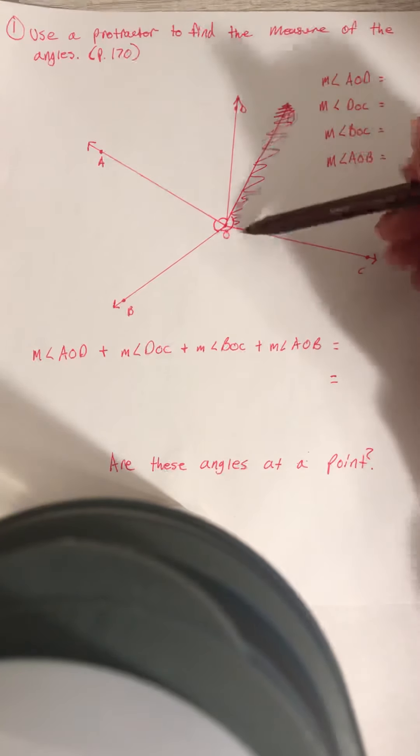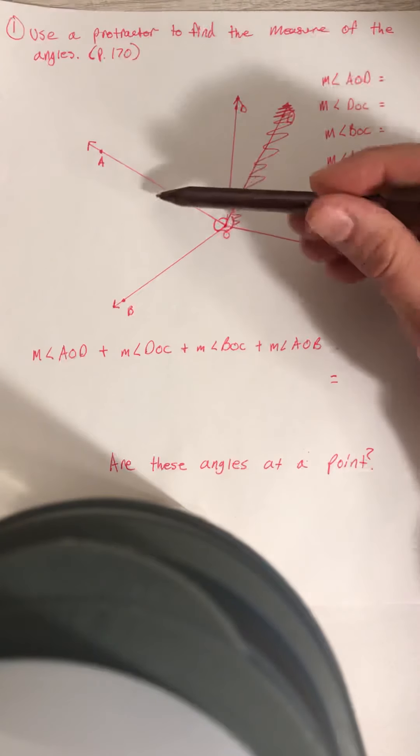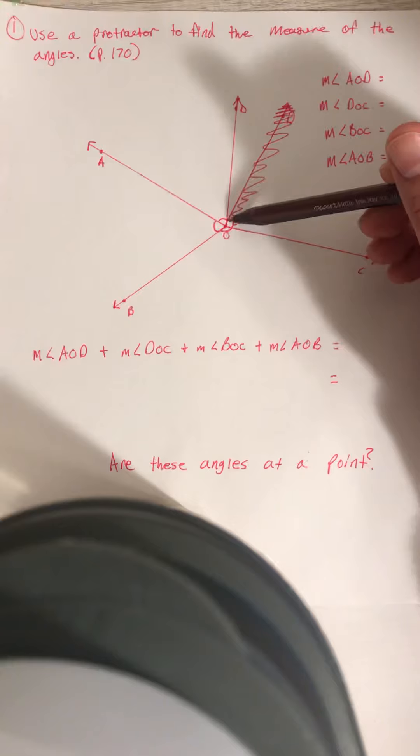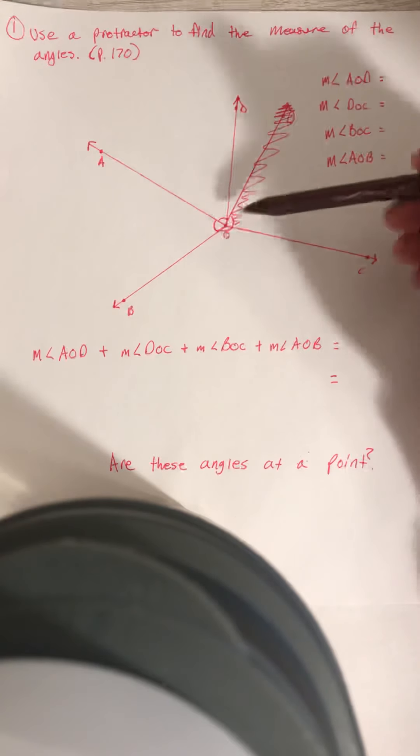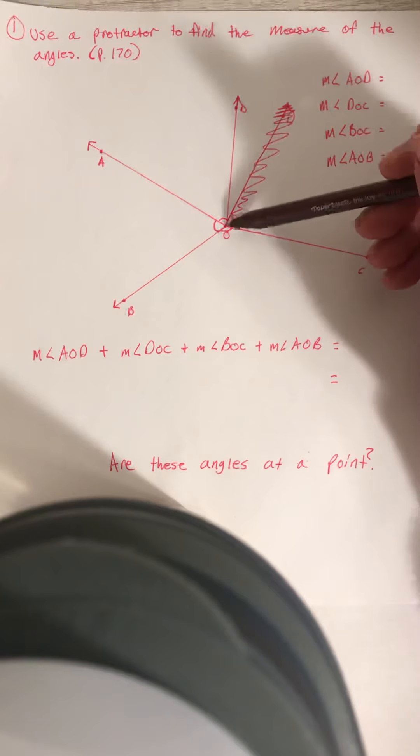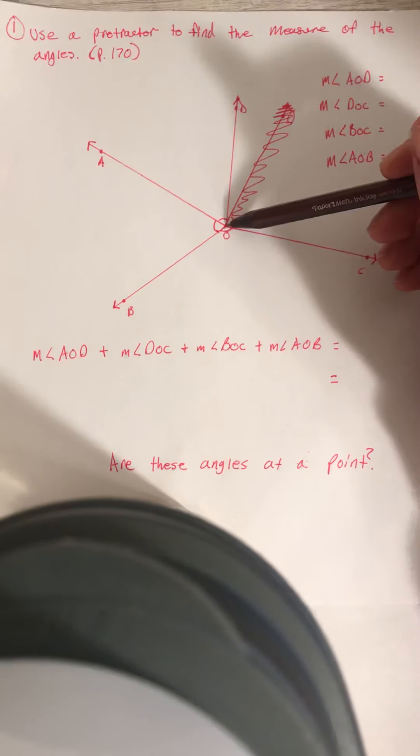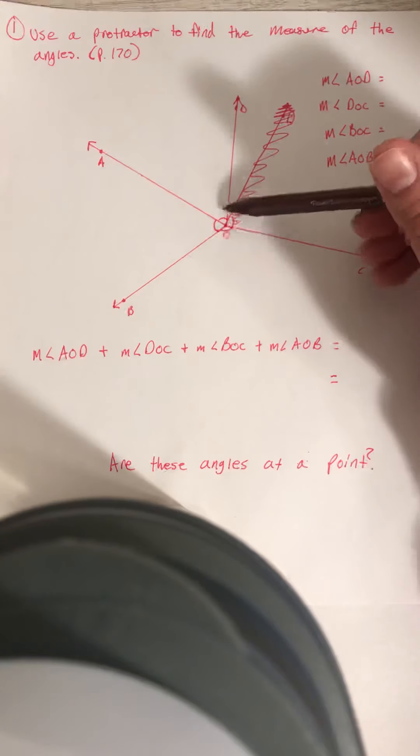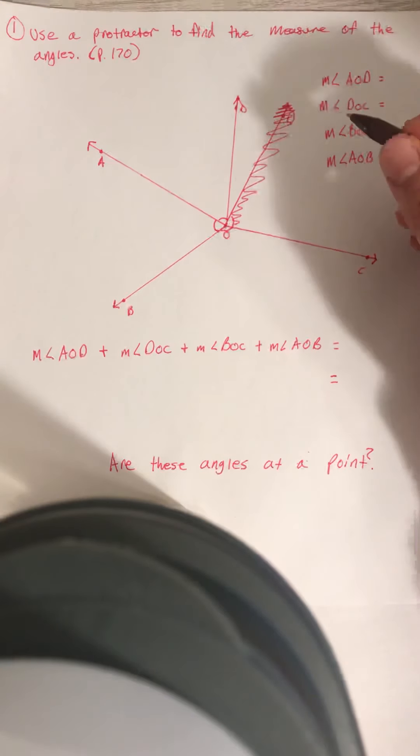So right here I have ray D, A, B, C, and my point O, right here in the middle. So I have these four rays that all meet at this point. And if I have rays that meet at a point, there are no lines, the total measure of those rays is going to equal 360 degrees, just like the measure of a circle.